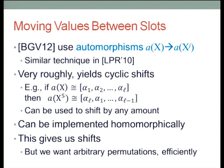The operation is: take the polynomial A and integer J in the clear, and map it to A(X^J) — A applied to X to the power J — then reduce modulo the ring polynomial. Similar techniques were used in LPR two years ago. Without going into details, roughly speaking the effect of that operation is to rotate the array cyclically. It's not exactly true, but it's a good enough approximation to work with.